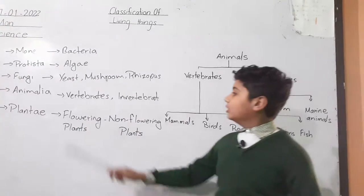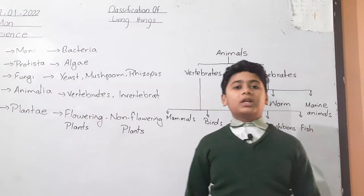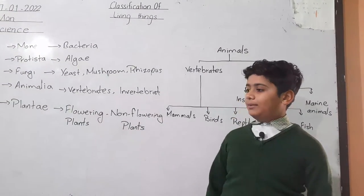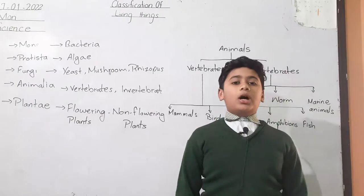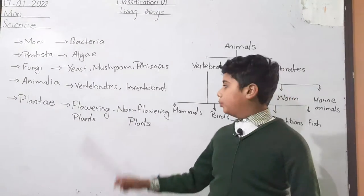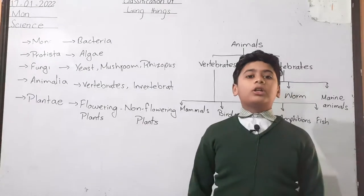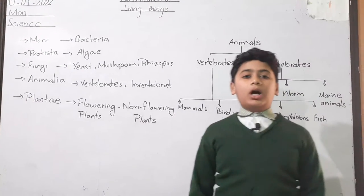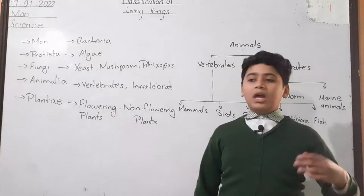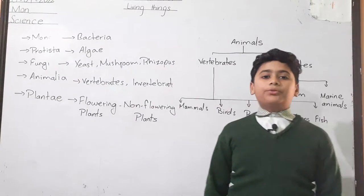I am telling you about Kingdom Animalia. There are 2 groups of Kingdom Animalia: Vertebrates and Invertebrates. The organism which has a backbone is called Vertebrates and the organism which does not have a backbone is called Invertebrates. There are also 5 groups of Vertebrates.